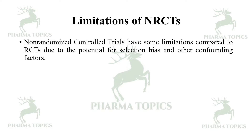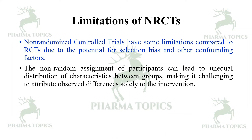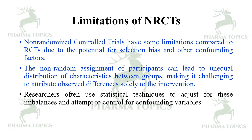The limitations of non-randomized control trials: compared to randomized control trials, they have potential for selection bias and other confounding factors. The non-random assignment of participants can lead to unequal distribution of characteristics between groups, making it challenging to attribute observed differences solely to the intervention. Researchers often use statistical techniques to adjust for these imbalances and control for confounding variables.